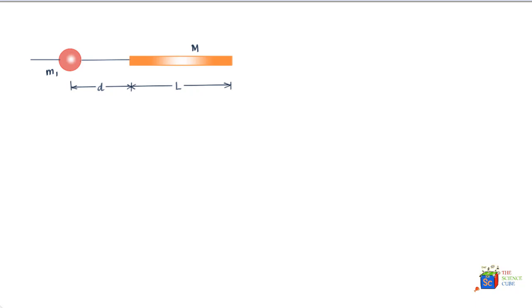So how we'll go about is we'll take a very small mass, very thin, and let's say its mass is dm, and it resides over here. So this is mass dm, let's label it dm, and let us say it is at a distance r from the center of mass of mass m1.